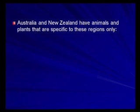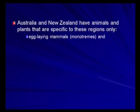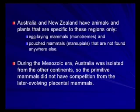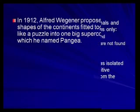In Australia and New Zealand, the animals and plants are very specific to their regions only. Australia has egg-laying mammals - your monotremes - and pouched mammals, your marsupials like kangaroos. They're not found anywhere else in the world - they are special and specific to Australia. During the Mesozoic era, Australia was isolated from the other continents, so the primitive mammals did not have competition from the later-evolving placental mammals, which is why they are still around today.